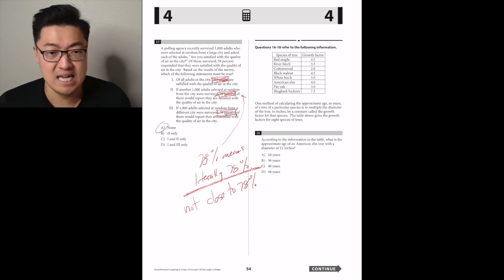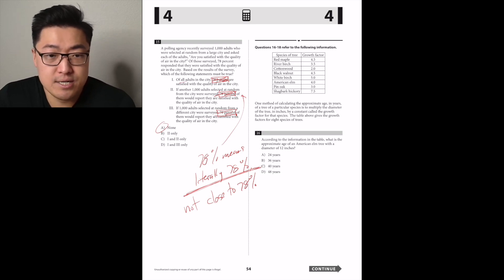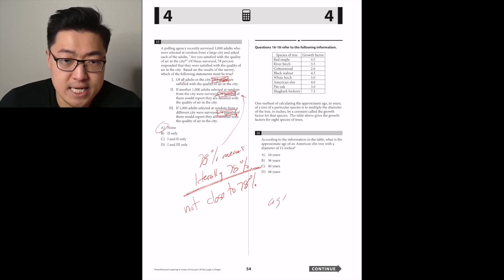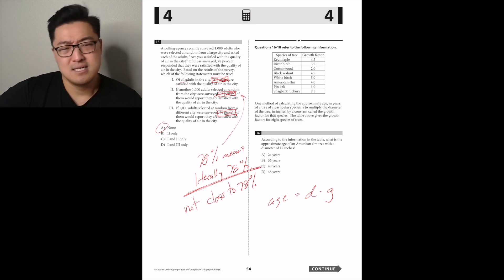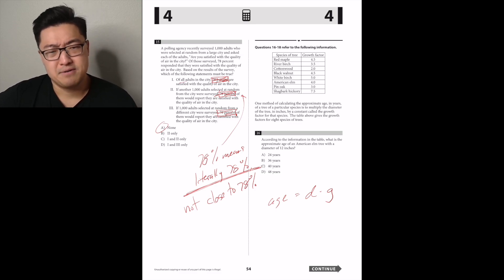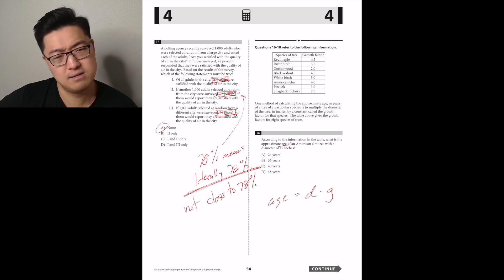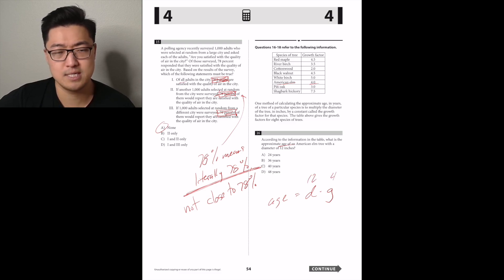One method for calculating the approximate age of a tree is to multiply the diameter in inches by the growth factor of that species. The table gives the growth factor for eight species. What's the approximate age of an American elm tree with a diameter of 12? The American elm's growth factor is 4, so 12 times 4 equals 48. Answer D.